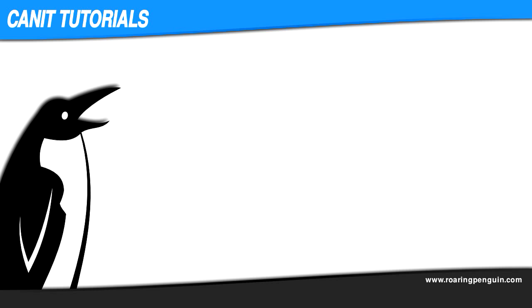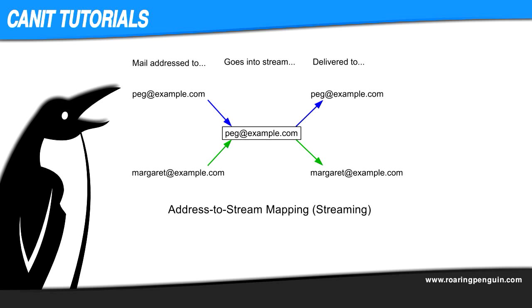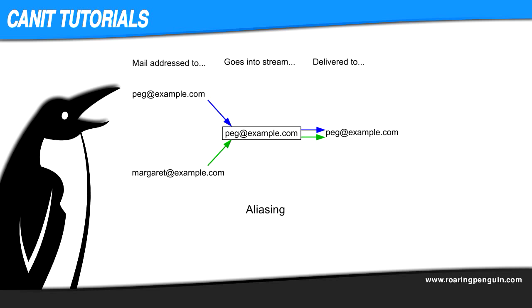I should mention one other mechanism for dealing with aliases. The streaming techniques mentioned so far cause the aliases to share the same quarantine, but don't actually rewrite recipient addresses. For example, if you put margaret.example.com and peg.example.com into a single stream peg.example.com, the recipient addresses are still preserved when the email emerges from Canet. In the Setup menu, you will find not only Address-to-Stream Mapping, but also an Aliases option. The difference is that Address-to-Stream Mapping causes alias addresses to share the same quarantine as the primary address, but the email is delivered unaltered — the recipient address is not changed. If you make the mapping in the Aliases section instead, the email to margaret.example.com will not only share the same stream as peg.example.com, but the recipient address will actually be changed to peg.example.com as well.